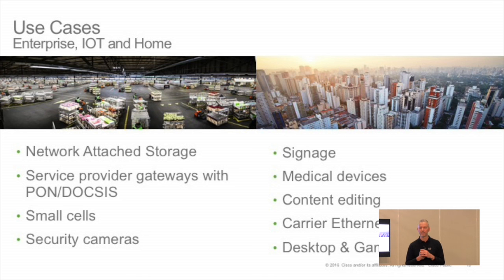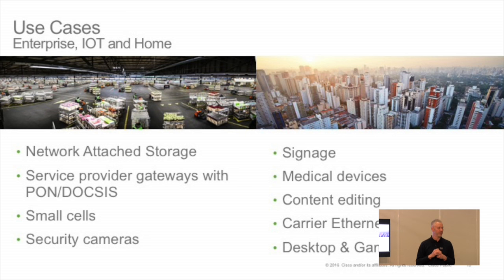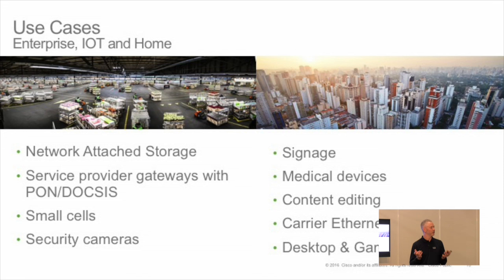Security cameras, signage, medical devices: if you were here last year in Milan, we talked to a customer from UC Leuven — a Belgian hospital. They started four years ago to transition from Category 6 to 6A and have done 25% of their buildings. They're also transitioning towards digital medicine with lots of x-ray machines and scans — they want high bandwidth on the edge of the network.